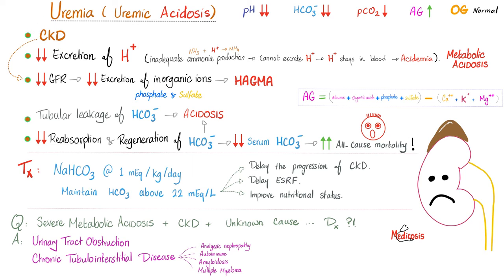This poor kidney with chronic kidney disease cannot excrete all the acids, so all of that acid ends up in the blood, giving metabolic acidosis. The GFR is poor — I am unable to excrete the inorganic wastes: the phosphates, the sulfates, the negatively charged anions — and that's why the anion gap gets wider and wider. Bicarbonate is consumed to try to buffer all of this, so it decreases. Moreover, the poor tubules will leak bicarbonate into the urine — they cannot reabsorb it. The lower your serum bicarbonate, the greater your risk of mortality.